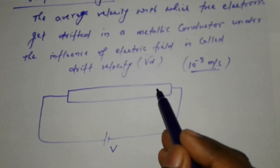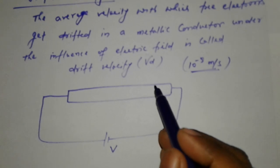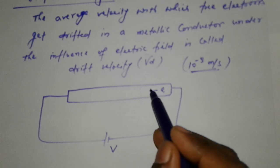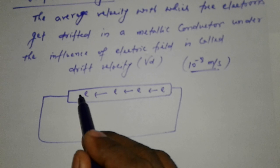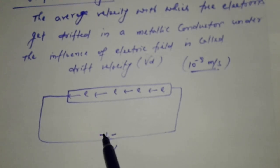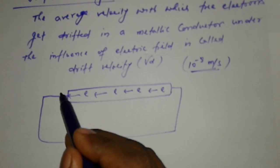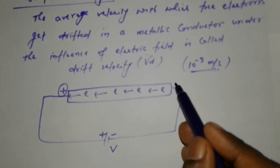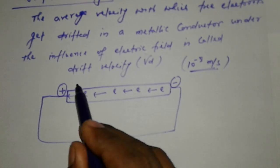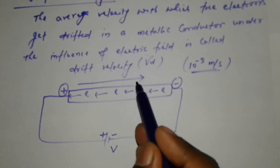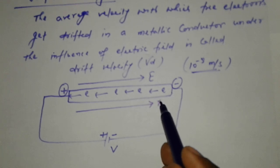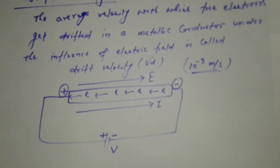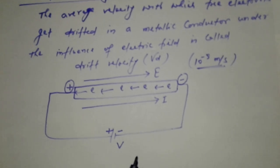In this, free electrons are present. When we connect this with a battery, the current direction is from positive plate to negative plate, but direction of electron drift velocity is from negative plate to positive plate.